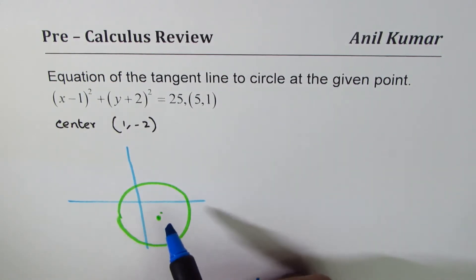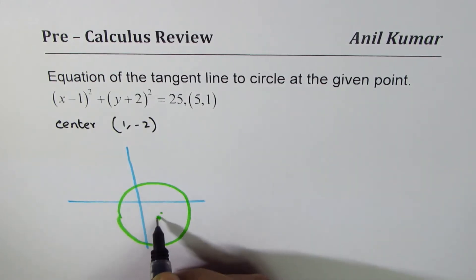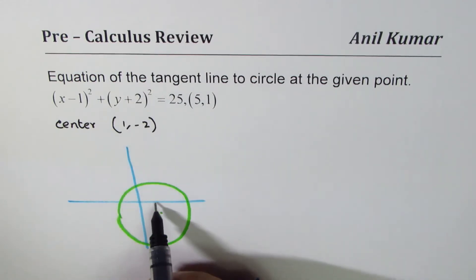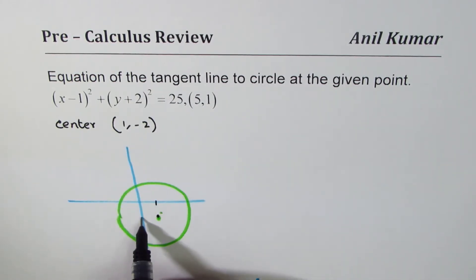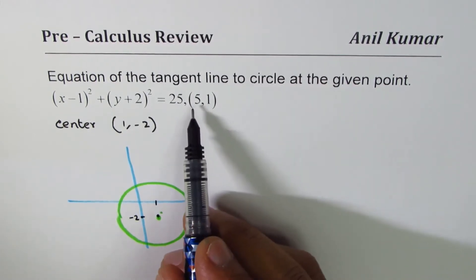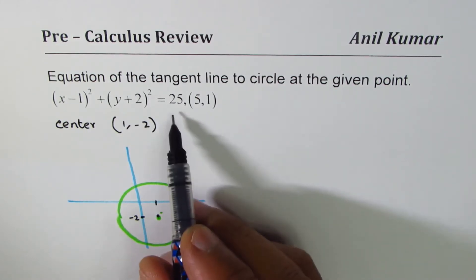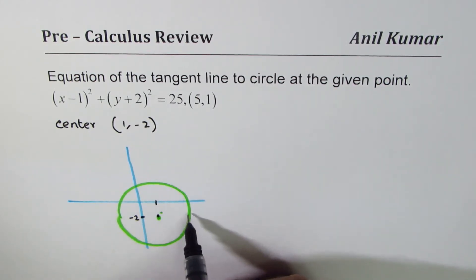And the point given to us is (5, 1). So we are saying this point here is x value of 1 and y value of minus 2. The point on the circle is given at (5, 1), and the radius is 5. So that means (5, 1) will be somewhere here.